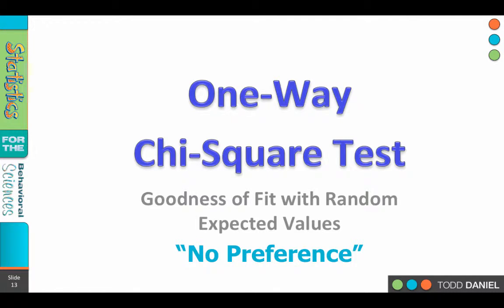We will first learn to calculate a one-way chi-square test with the assumption of randomness, the goodness of fit with random expected values, what I'm going to call no preference. In other words, if sodas are chosen randomly, that means there's no preference for the type of soft drink.